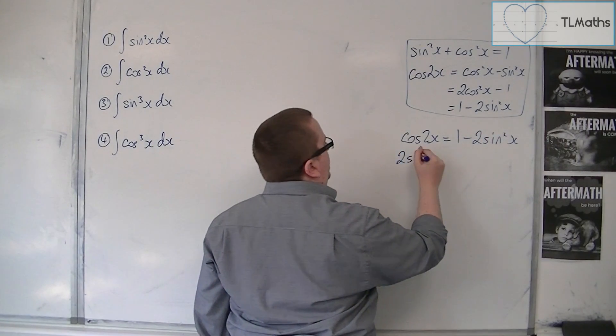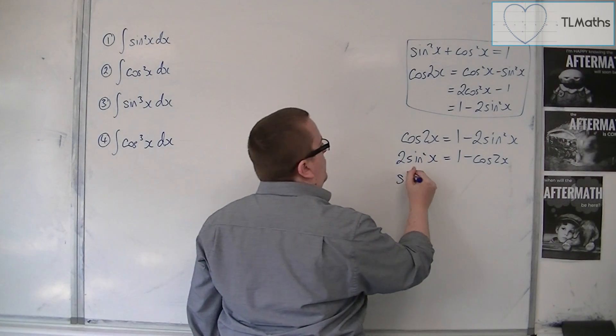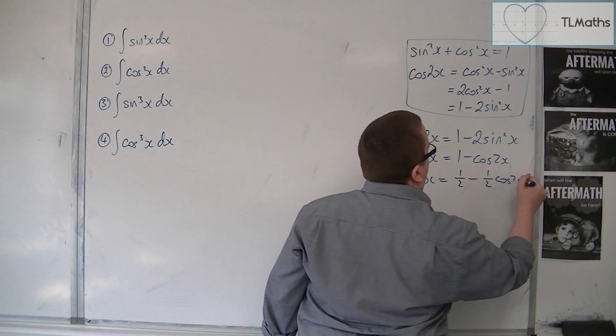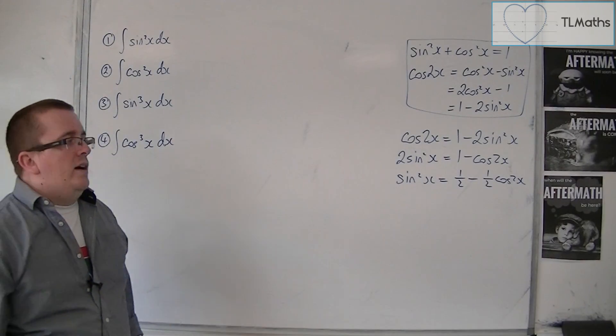So we're going to add 2 sine squared to both sides. Subtract cos2x from both sides. Then we can half both sides. And we get this identity here. Sine squared is a half, take away a half cos2x.